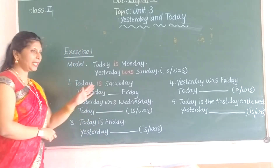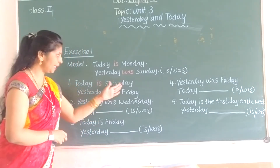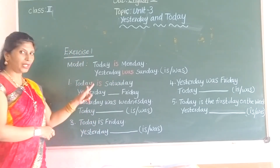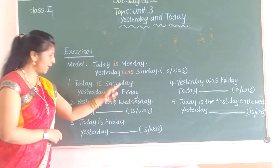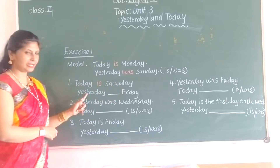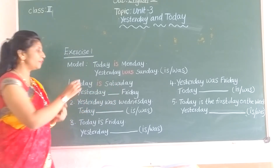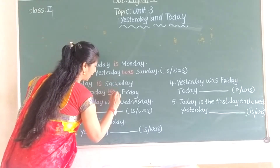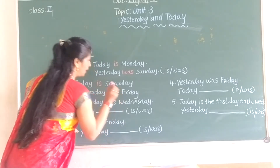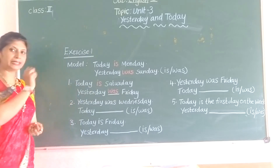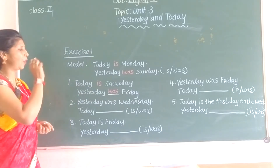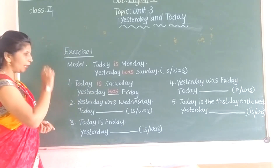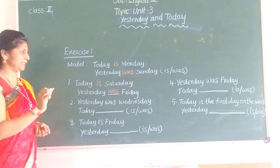First one: Today is Saturday, yesterday was Friday. W-A-S. Understood? Yesterday means 'was', today means 'is'.